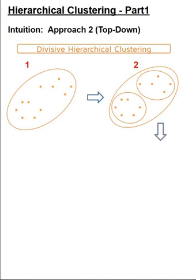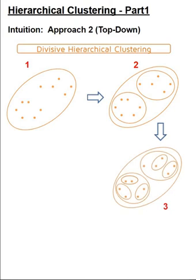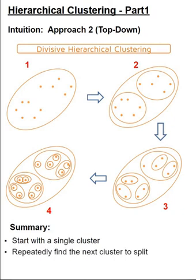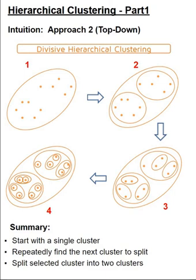Then we continue to form subclusters for nearby data points, which is step three, and we do this recursively till each data point is a cluster on its own, which is step four. To summarize, we start with a single cluster and repeatedly find the next cluster to split. We split the selected cluster into two clusters and we continue till all data points are clusters themselves, which is also called singleton clusters.